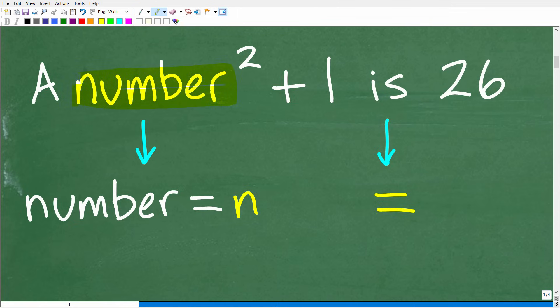We have a number squared plus 1 is 26. We want to translate this into an actual algebraic equation. What's a number in algebra? A variable represents a number. We have an unknown value, a number. Let's write a symbol down to represent that number, and we call those symbols variables. I'm going to use the variable n. Of course, you could use x.